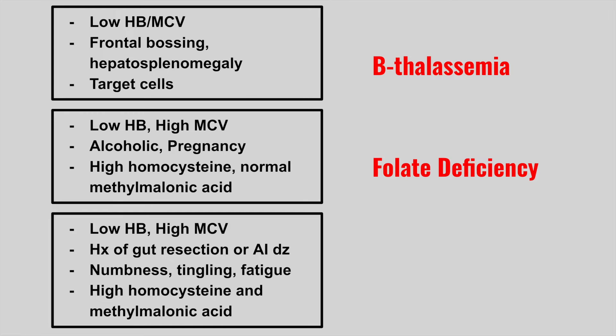The next patient is going to have a low hemoglobin, a high MCV, a history of gut resection or an autoimmune disease, and they get numbness, tingling, and fatigue, with a high homocysteine and high methylmalonic acid level. This is B12 deficiency.